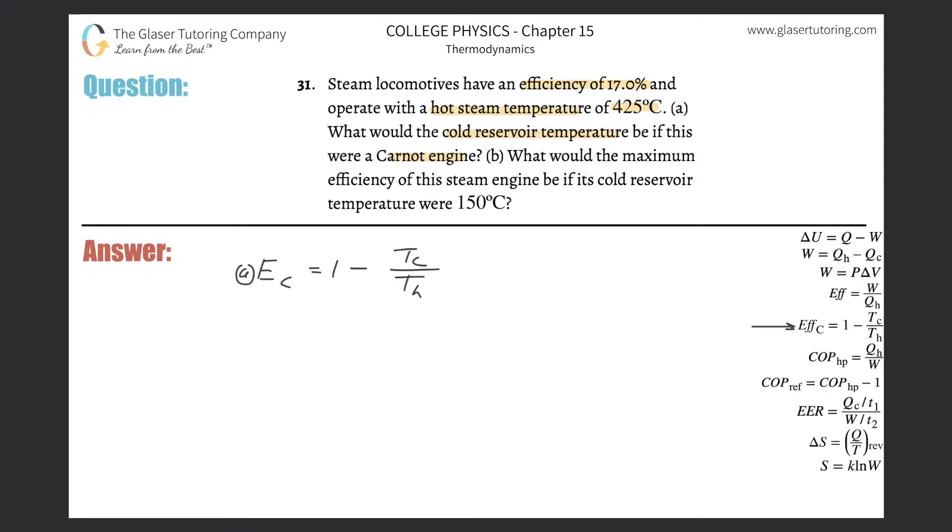They want us to find the cold reservoir temperature, so we've got to solve this for T sub C. So just switch these two values, write these two mathematical terms from one side to the other so we can begin to isolate the cold temperature. So T sub C divided by T sub H is equal to 1 minus the efficiency of the Carnot.